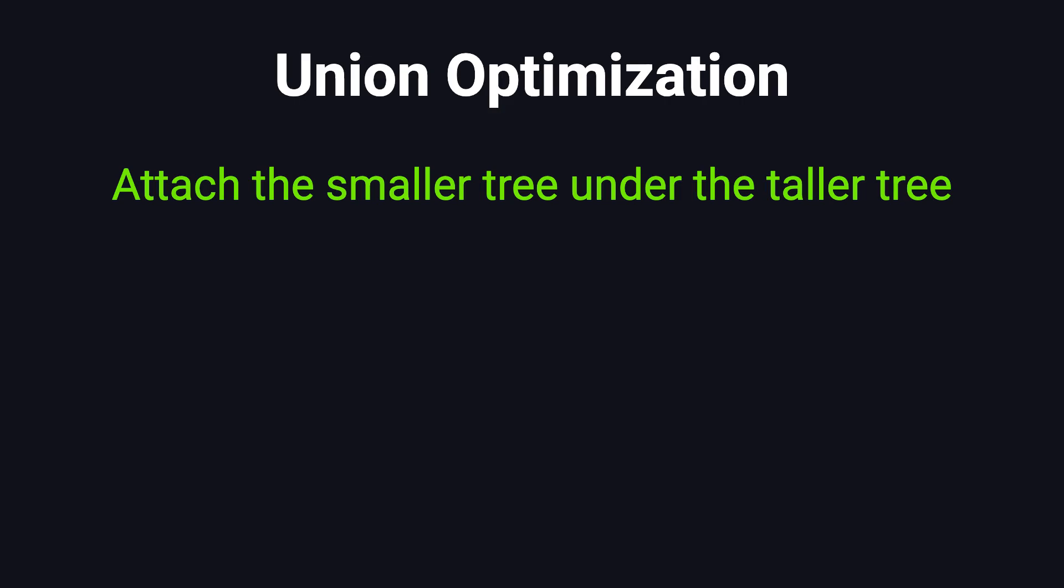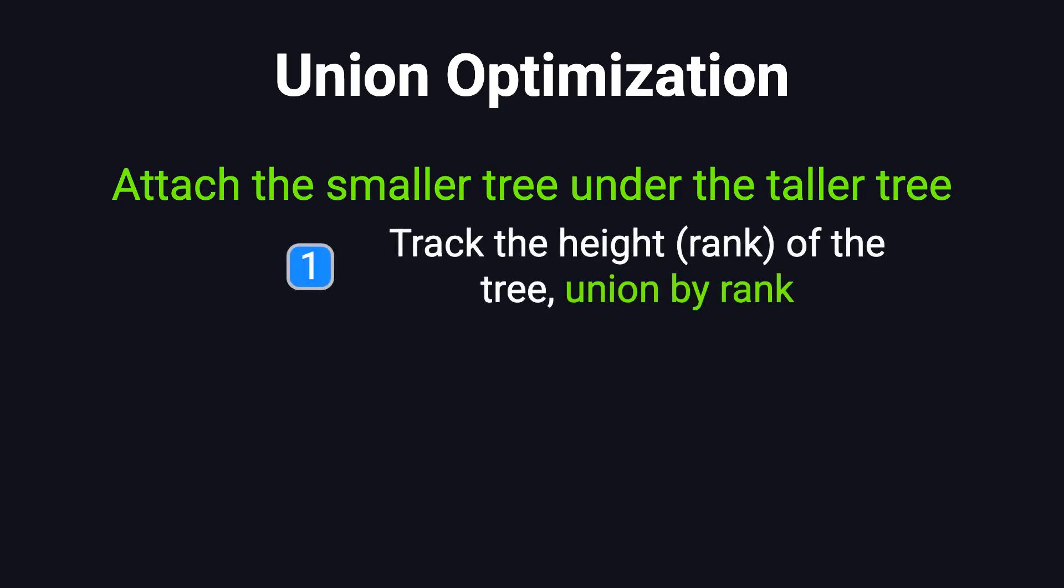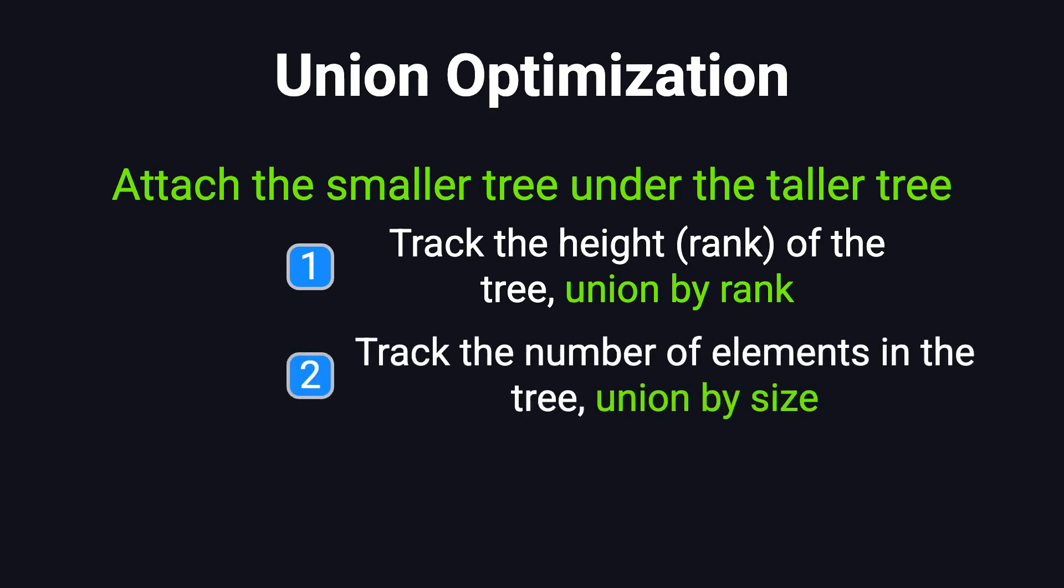Well, there are two common strategies. One way is to track the height of each tree. We call this the rank, and use it to guide the merge. This approach is known as union by rank. The other way is to track the size of each tree, meaning the number of elements it contains, and merge based on size. This is called union by size.